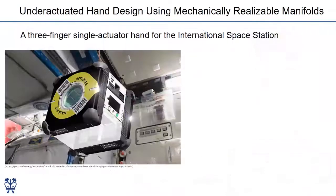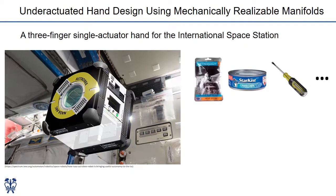We implemented our method in a three-finger single actuator hand for an assistive free-flyer robot in the International Space Station. While the tasks in the ISS require versatility, the limited space onboard the free-flyer requires a very compact hand and thus few actuators. Through a series of interviews with domain experts, we identified a set of objects and features that the hand is expected to interact with.